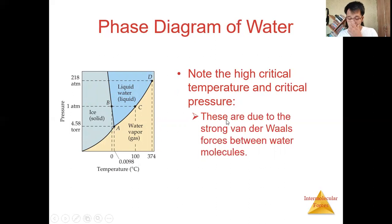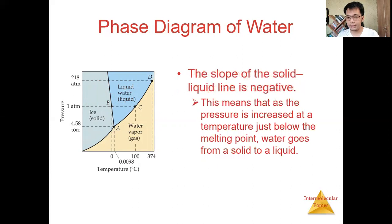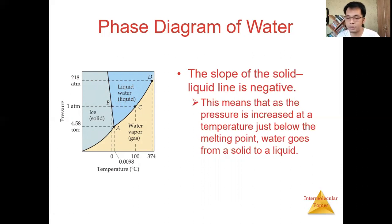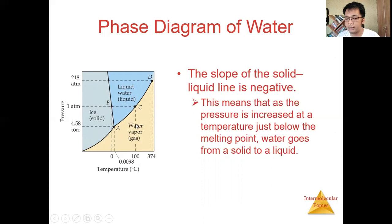At point B, at 1 atm, we have melting and freezing. We all know the freezing point of water is 0°C, where melting and freezing exist simultaneously — dynamic equilibrium — and the substance can be either ice or liquid. At point C, this is where the normal boiling point occurs, because we reach the atmospheric pressure of water at 100°C.